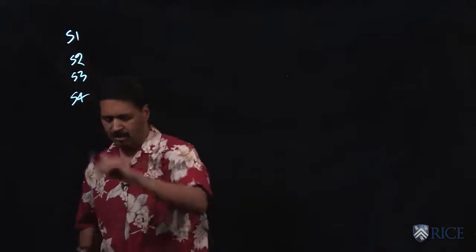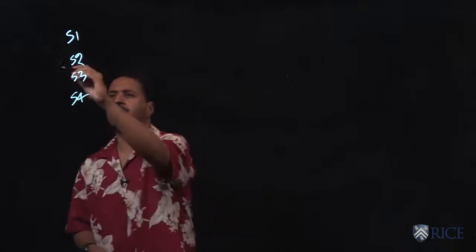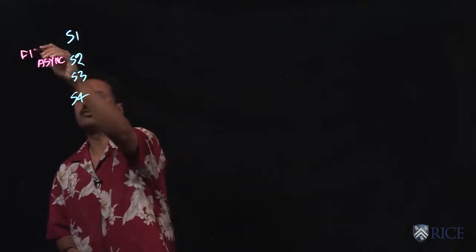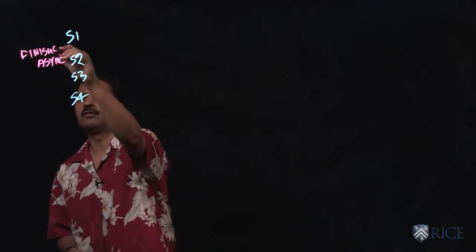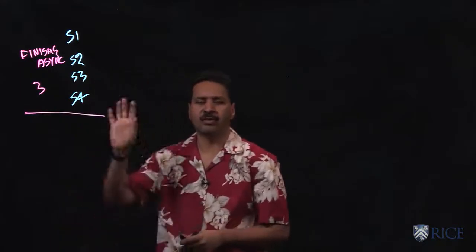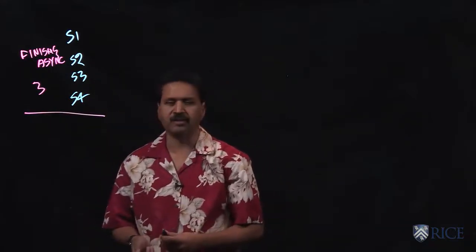What we would do is say async of s2, and then a finish around s2, s3, and that will enable s2 and s3 to run in parallel with each other.